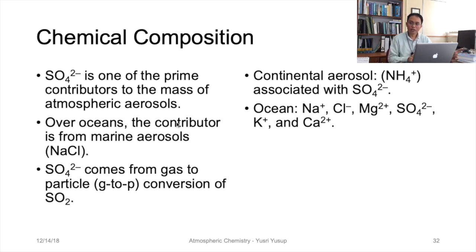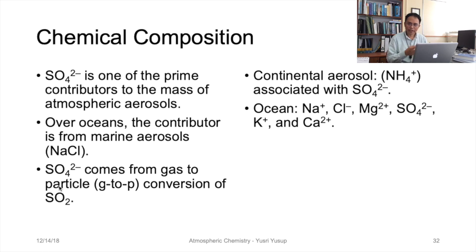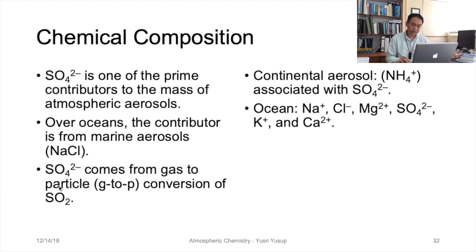Now we discuss the chemical composition of tropospheric aerosols. Sulfate ions are one of the prime contributors to the mass of atmospheric aerosols. Over the oceans, the contributor comes from marine aerosols — for example, sodium chloride. Sulfate ions come from gas-to-particle conversion, originally as a gas converting to a particle from sulfur dioxide. On the continental side, ammonium ions are associated with sulfate ions. Over the ocean, emissions include sodium, chloride, magnesium, sulfate, potassium, calcium, and hydrogen ions.